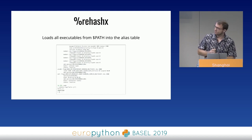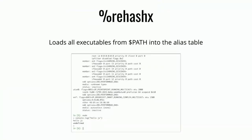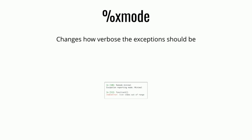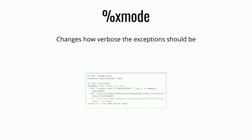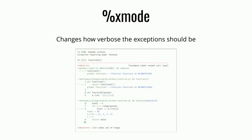IPython has four different settings for how verbose exceptions should be, and you can change between them with the `xmode` magic function. You can select the lowest amount of information, a bit more verbose, context (the default), or the most verbose, which will also show you the local and global variables for each point in your stack trace.